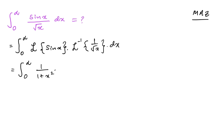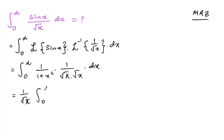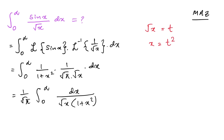We change the variable and write 1 over (1 + x²). The inverse Laplace transform of 1 over square root of x is 1 over (square root of π times square root of x). So 1 over square root of π is a constant we can take outside the integral, giving us the integral from 0 to infinity of dx over (square root of x times (1 + x²)). We take the substitution √x = t, so x = t², dx = 2t dt.